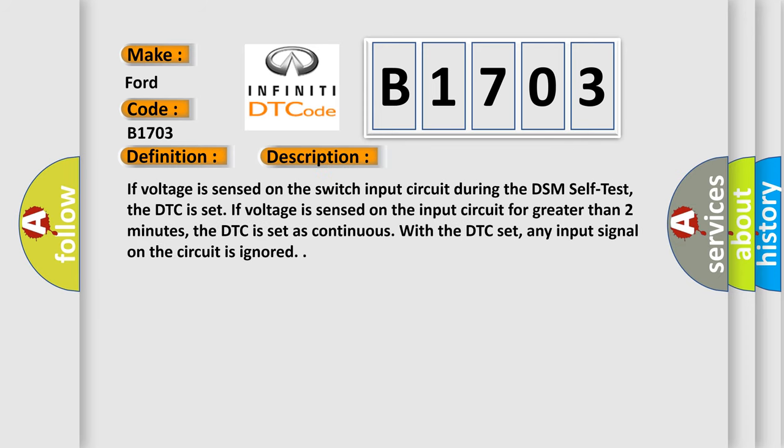If voltage is sensed on the switch input circuit during the DSM self-test, the DTC is set. If voltage is sensed on the input circuit for greater than 2 minutes, the DTC is set as continuous. With the DTC set, any input signal on the circuit is ignored.